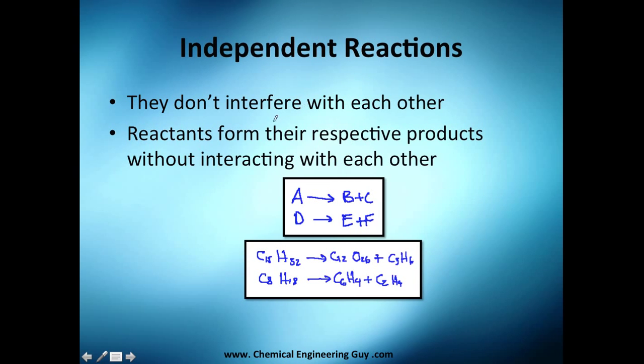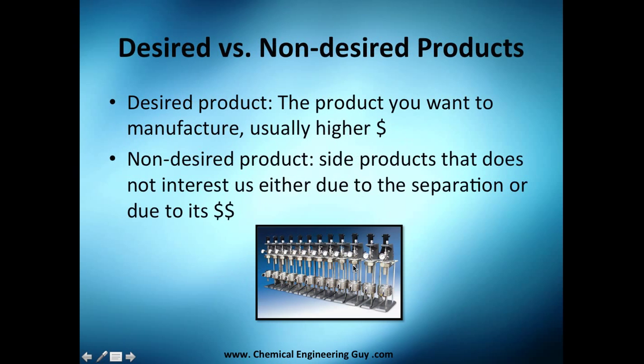Last but not least, actually the easiest, is multiple reactions that don't interfere with each other - they don't react. For example, A turns out to be B and C, and B and C never appear here. D turns out to be E and F, so you have no interference. They have their respective products. An example is in a petrochemical company when you are cracking substances. You have the 15 carbon molecule here and the 8 carbon molecule here.